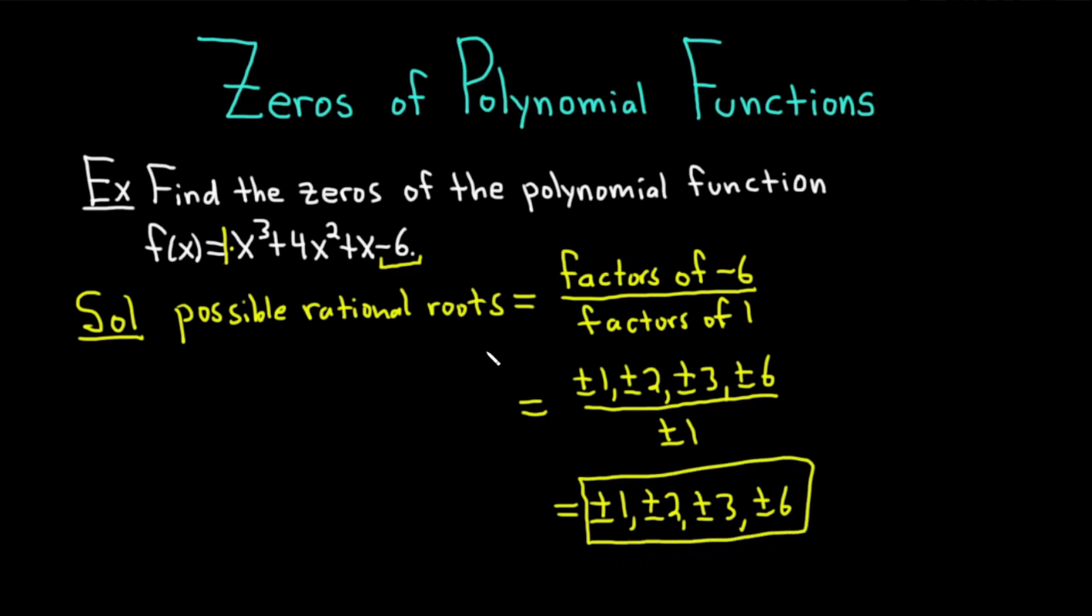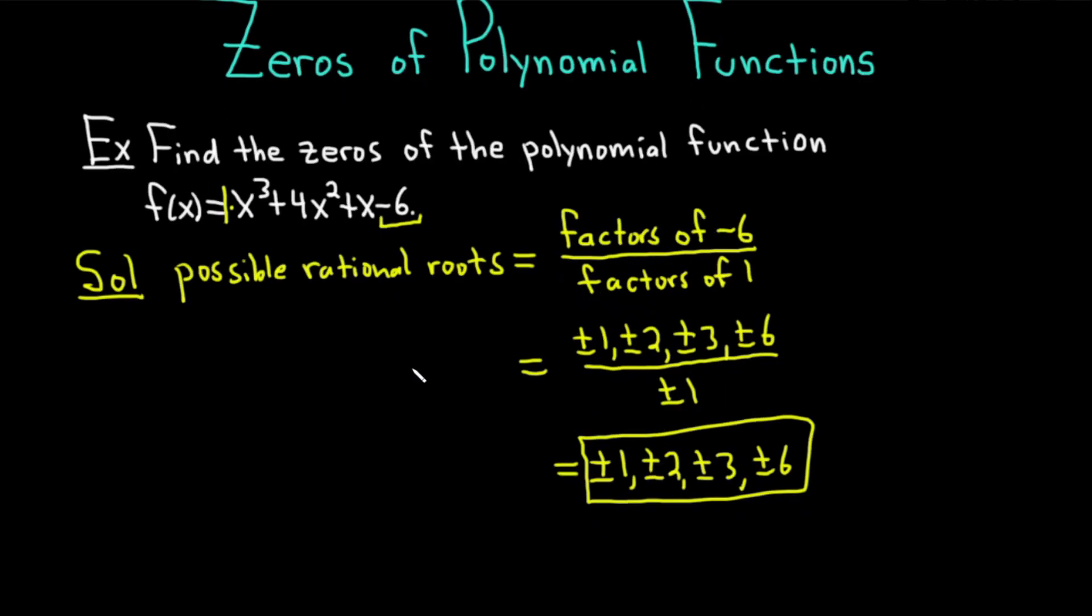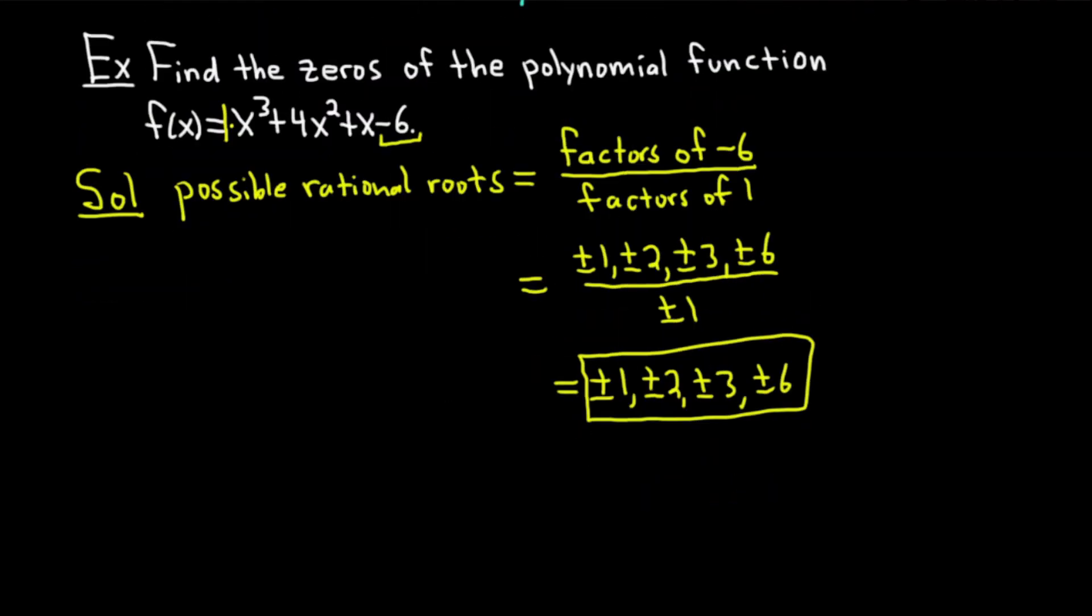So step one in this problem is always to find the possible rational roots. And again, always the factors of this constant term over the factors of the leading coefficient, which in this case is 1. The next step is to start checking your rational roots. So you can do that by using synthetic division. So it's a good idea to always start by checking 1. I'm going to show you how to check. I'm going to write check 1.